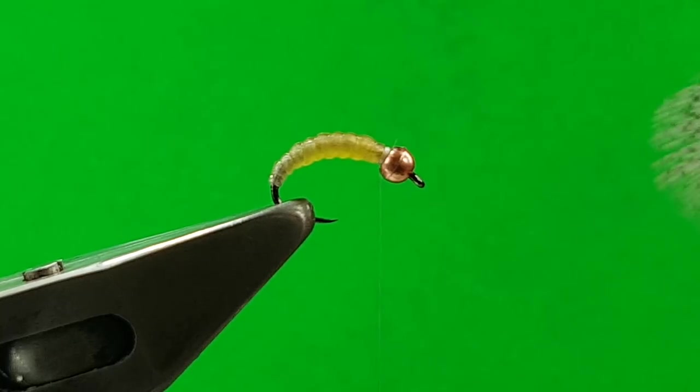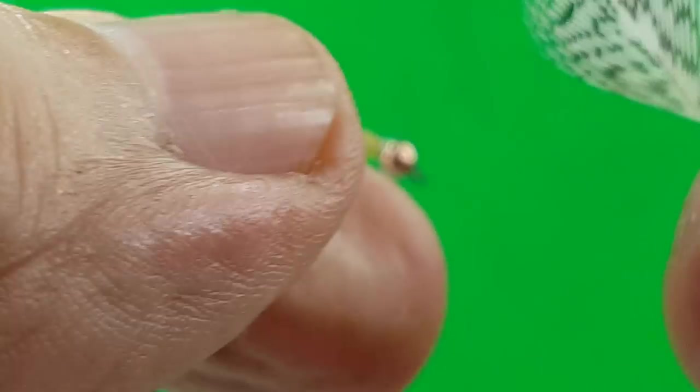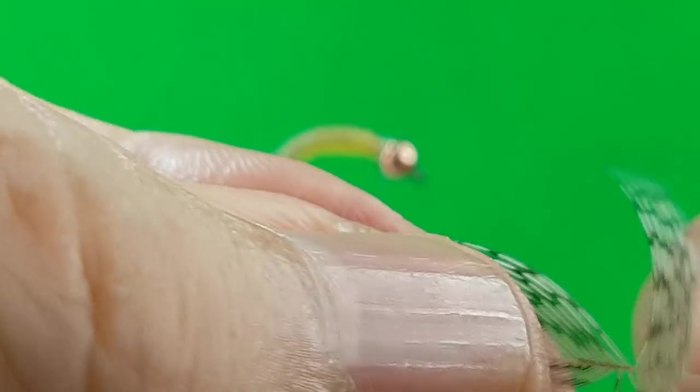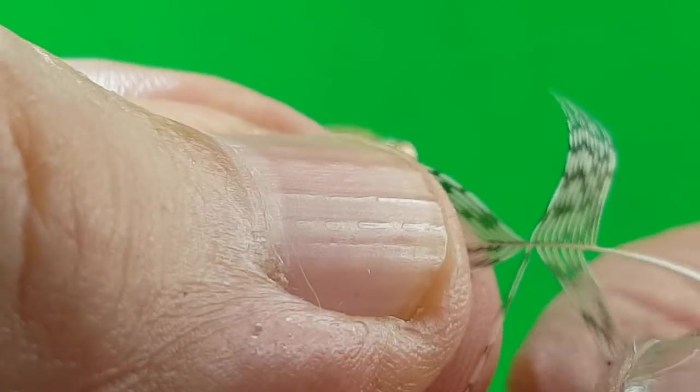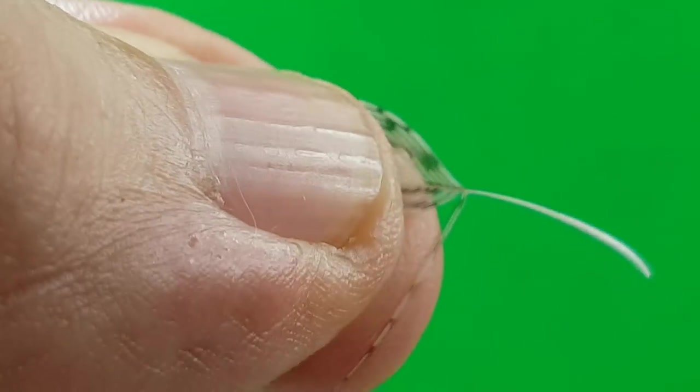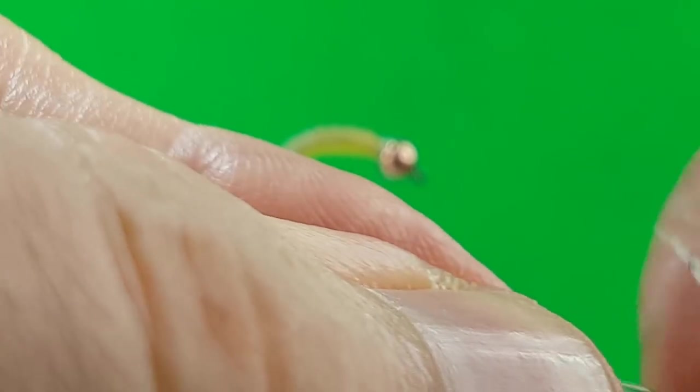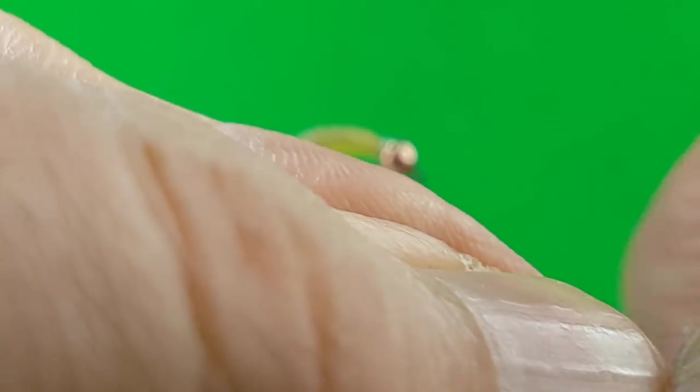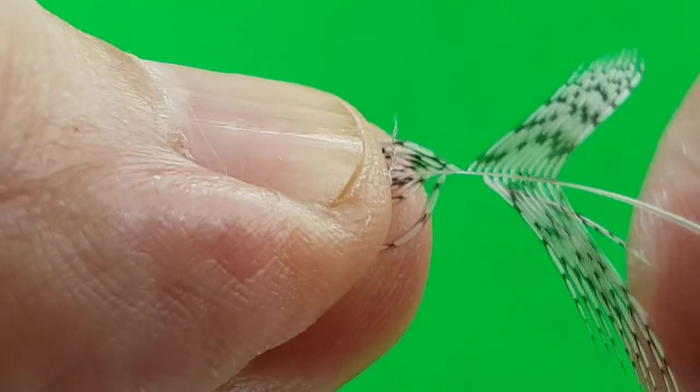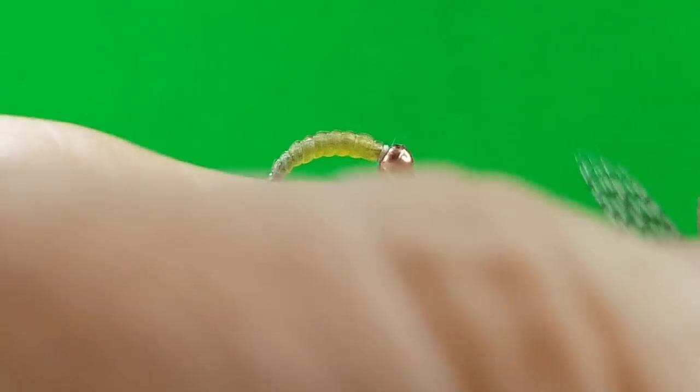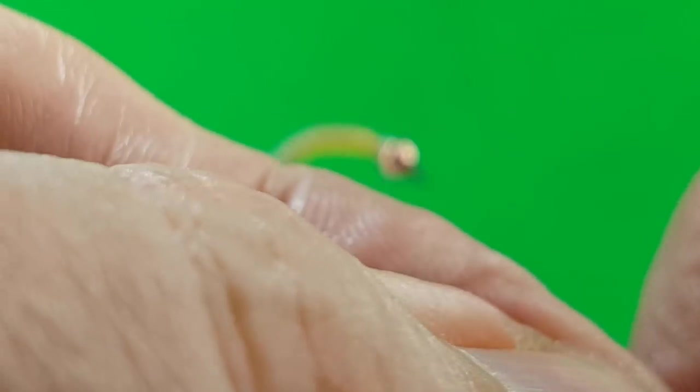So what you do is get your feathers, strip all the fluff off it. Take away the bigger feathers. Strip what you need, maybe six or seven each side.